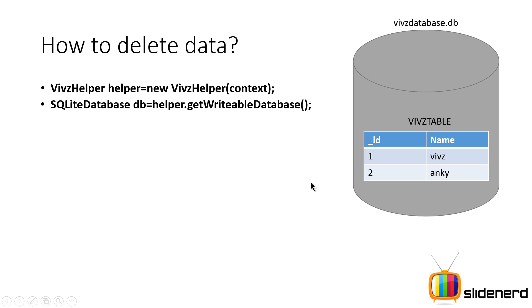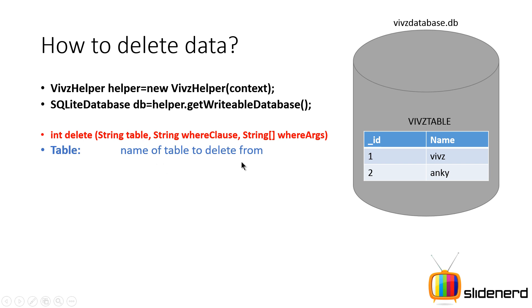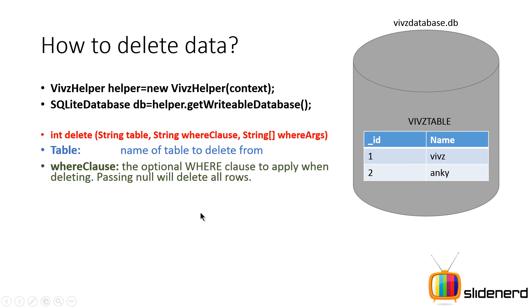The delete method looks like this: you have the string table where you specify the name of the table to delete from, and you have the WHERE clause which is optional. If you don't put a WHERE clause or if you supply null, remember it will delete all the rows — so be very careful about what you put. If you do want to specify a condition, we'll talk about how that's done shortly.